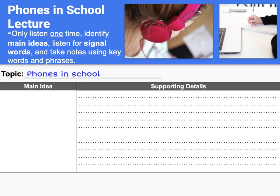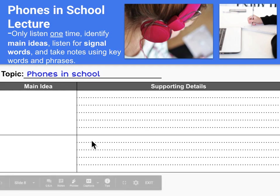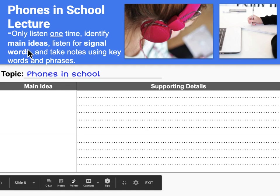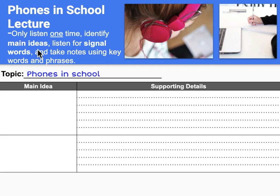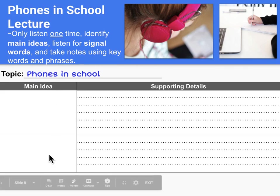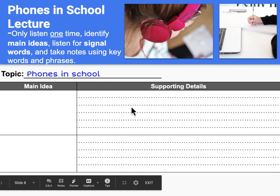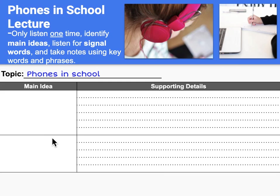So let's try another practice lecture with phones in school. This time you're again only going to listen one time, but now you're going to identify the main ideas yourself. You're also going to listen for signal words — these are words that tell you that the teacher is moving on to a new idea or topic within the lecture. Take notes again using keywords and phrases. Notice the solid straight line that goes through our main ideas to separate them. Let's do the lecture.